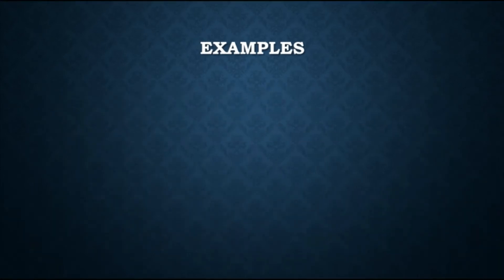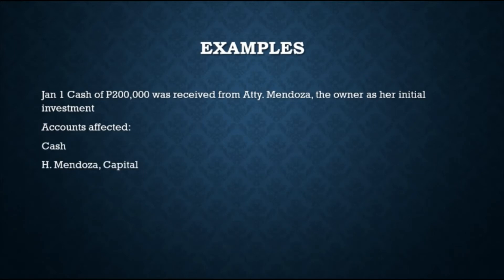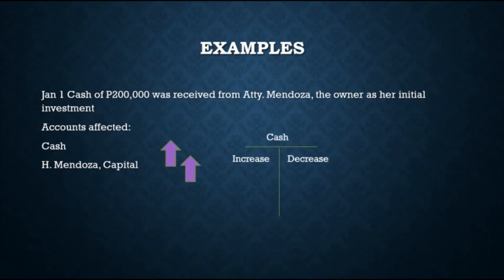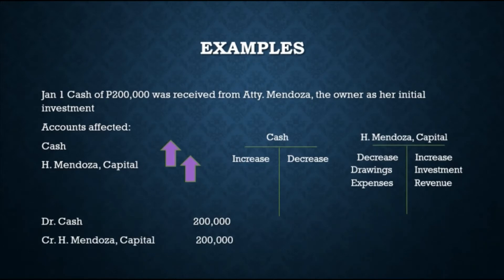For the first transaction on January 1, cash of $200,000 was received from Attorney Mendoza as her initial investment. The accounts affected are cash and H. Mendoza Capital. Both cash and capital will increase since the business received cash from Attorney Mendoza as investment. Since cash is an asset and it increased, it goes on the debit side. Since capital increased, it goes on the credit side. The journal entry is: debit Cash $200,000 and credit H. Mendoza Capital $200,000.